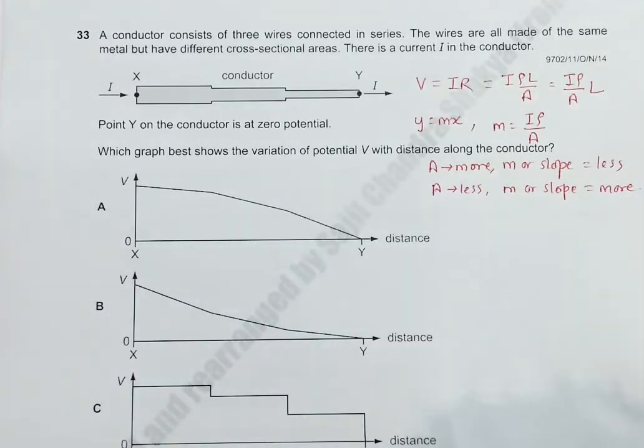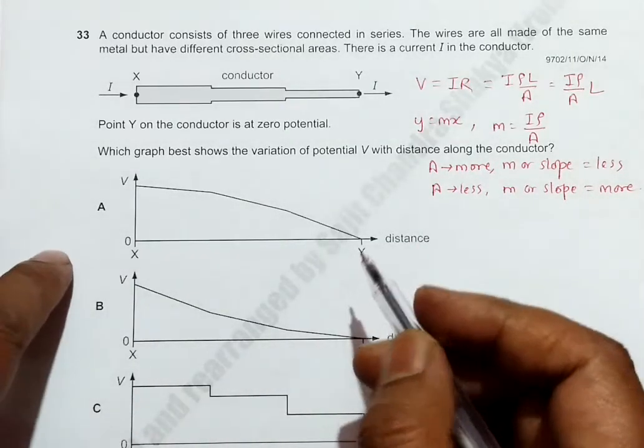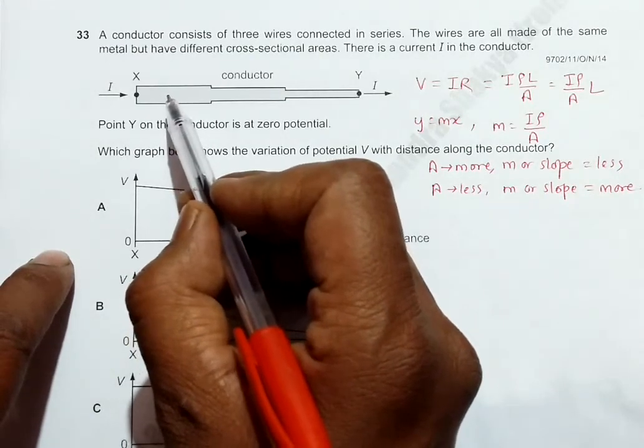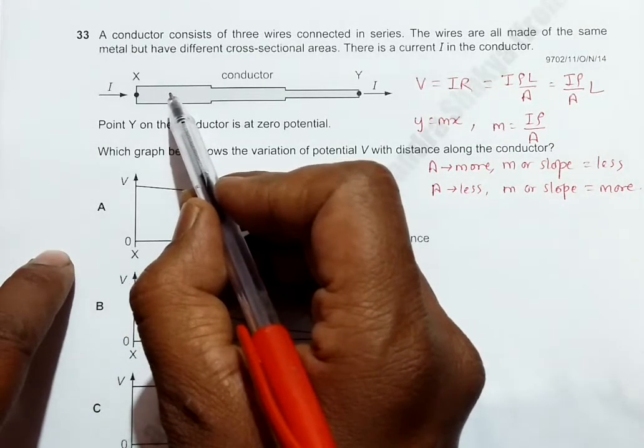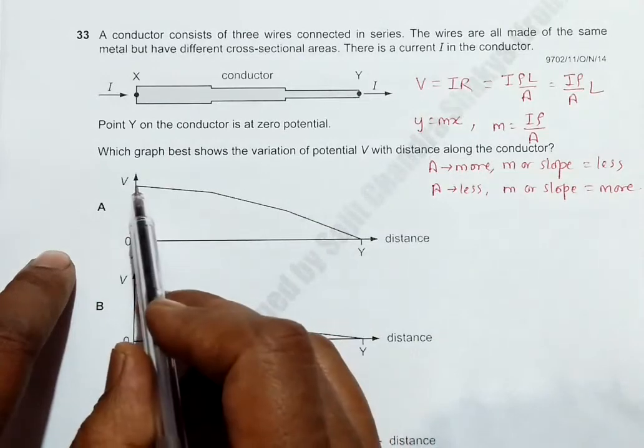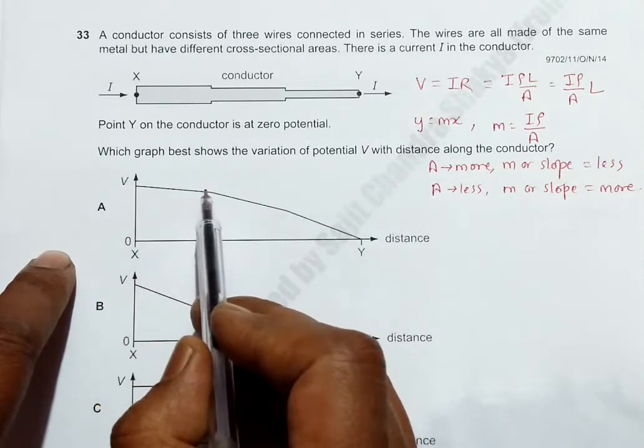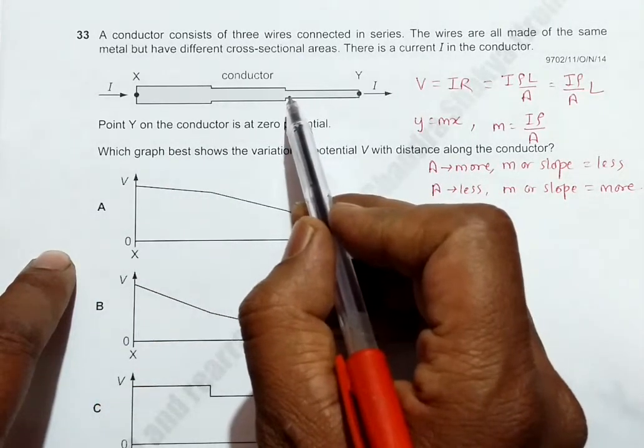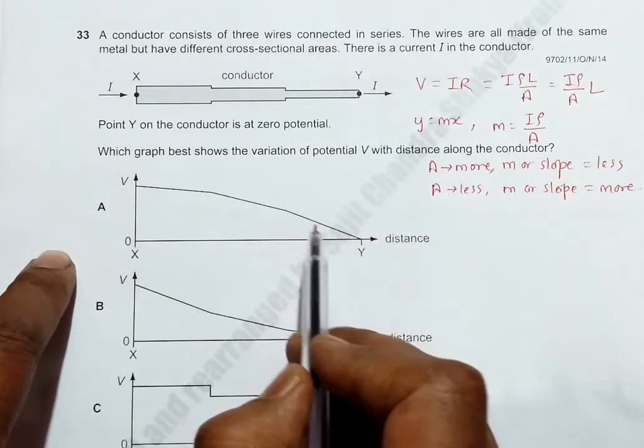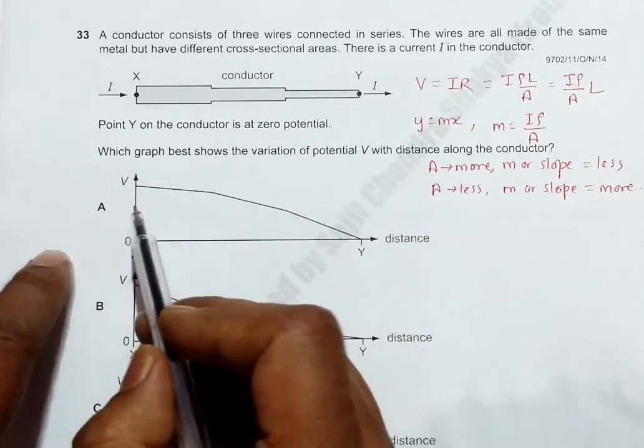In choice number A, we have here cross-section is high, so slope should be less. In this case, cross-section high, slope less; cross-section least, slope is also highest. So this seems to be the correct choice.